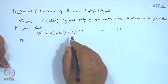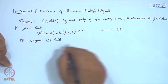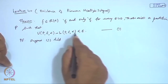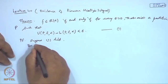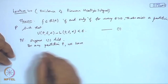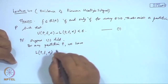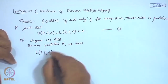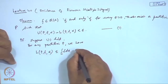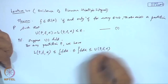Let us see the proof. Suppose Condition 1 holds — that is, for a given ε we can identify a partition such that upper sum minus lower sum is less than ε. Now for any partition P, we have: L(P,f,α) ≤ lower integral of f ≤ upper integral of f ≤ U(P,f,α).